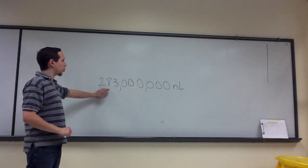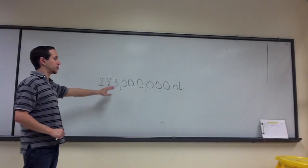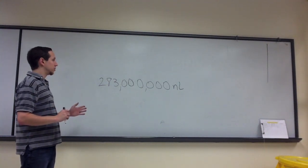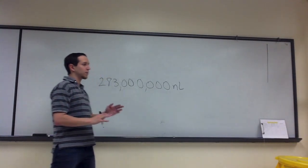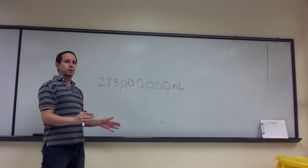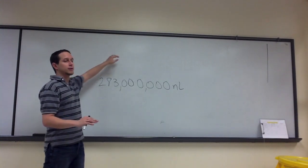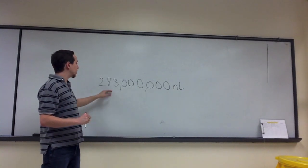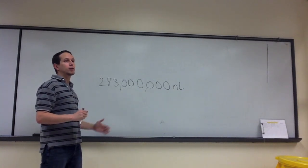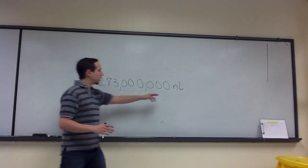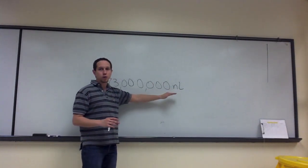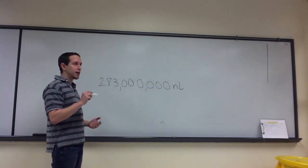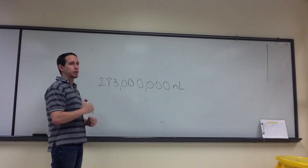In the previous tutorial we arrived at this answer as our units of measurement when we converted between decaliters and nanoliters. That was conversion between one prefix or unit and another. Now what we're going to do is take the number we obtained and express it in a different way. We're not changing the units at all — we're finding a new way to represent this number that's more streamlined and easier to write. We're going to use scientific notation.